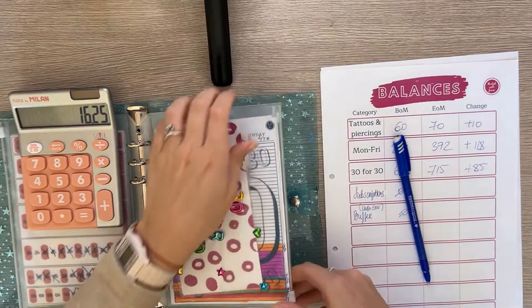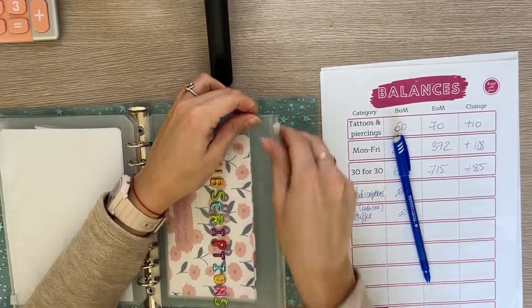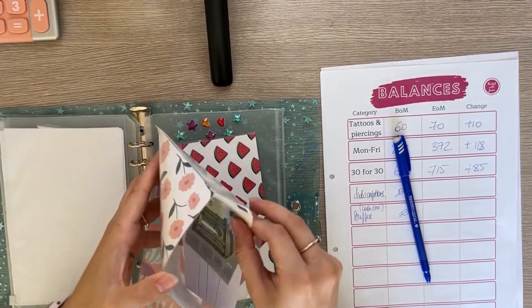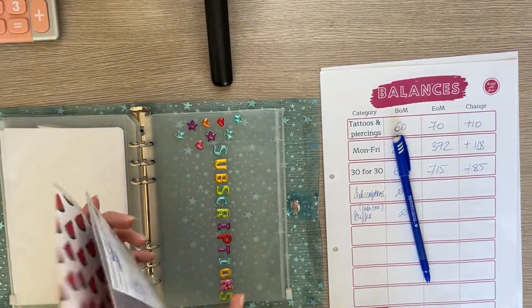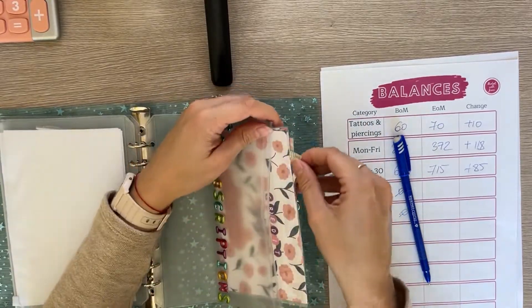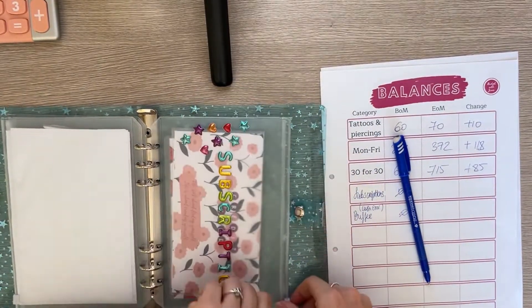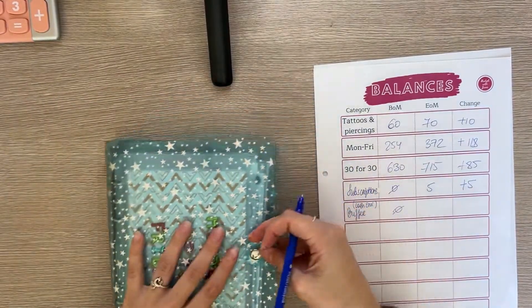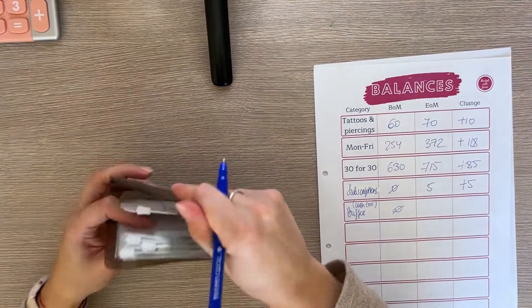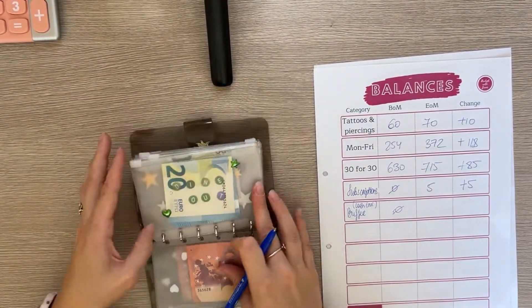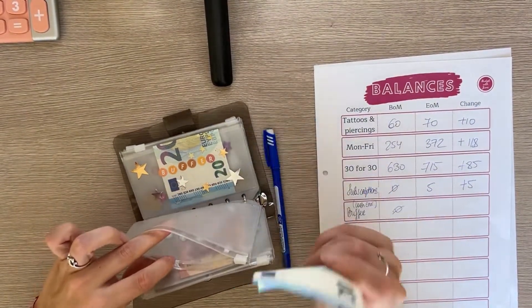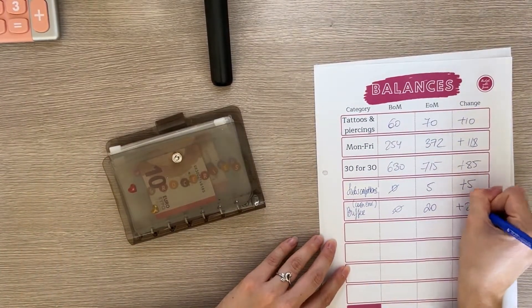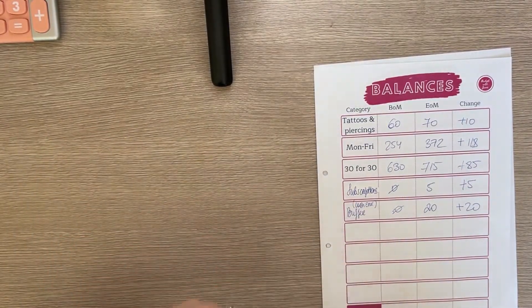The final envelope we have is subscriptions. We have three categories in here. I believe we only stuffed one which is the credit card and indeed we only have five. We have nothing in Spotify and nothing in deodorant. I've already paid for Spotify this year so I think I'll only start saving next year for 2023. The last envelope is buffer which is in my cash envelopes. I did spend quite a lot from here. We only have $20 left, it's a new envelope so it had zero at the beginning.